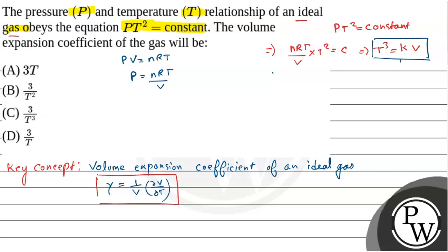If you differentiate, let's say this is equation 1. So if you differentiate equation 1, we get differentiation of T³ is 3T² dT equals differentiation of KV with respect to dT.